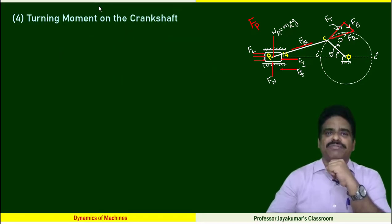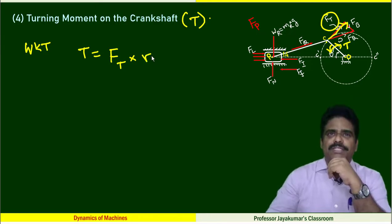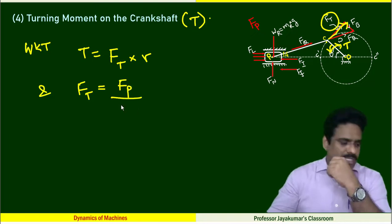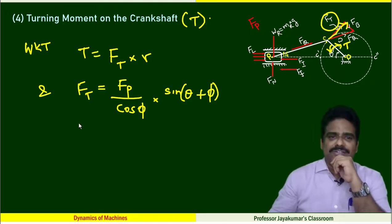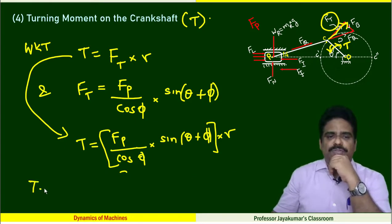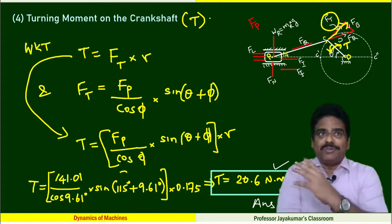Shall we go to the final answer? Turning moment on the crankshaft. We know that turning moment is equal to force perpendicular force component of the FQ multiplied by radius r. We know that formula for FT. FT is FP/cos φ multiplied by sin(θ + φ). This is the equation for FT. How? Please watch the derivation video. I can write this equation now. I can substitute all the given data. We got the final turning moment of the crank as 20.6 Newton meter. That's it. I hope you understood this problem clearly.